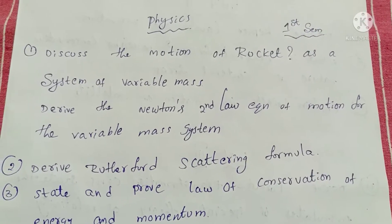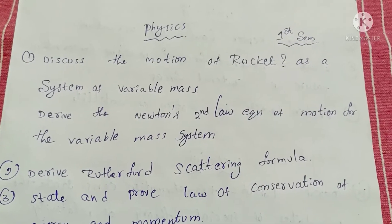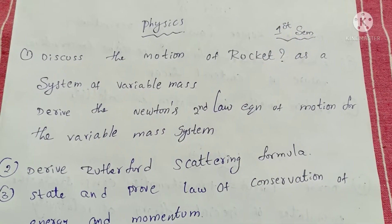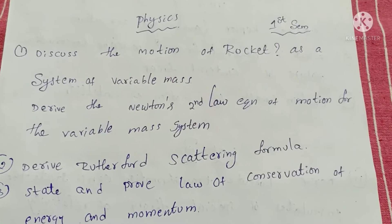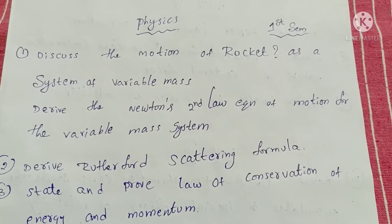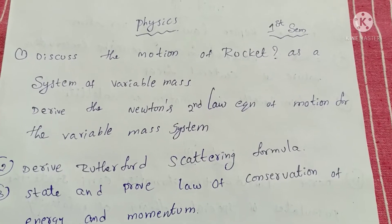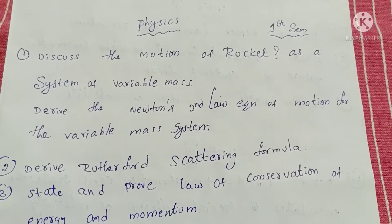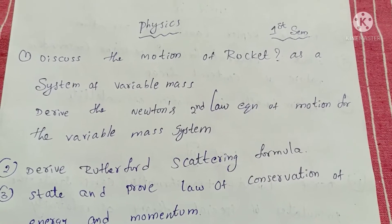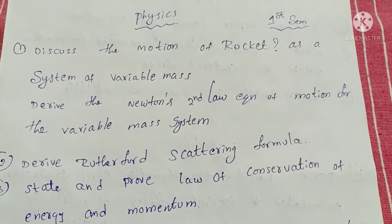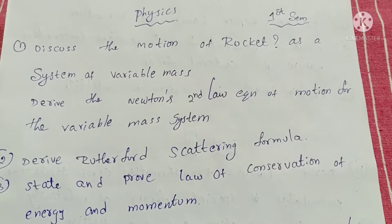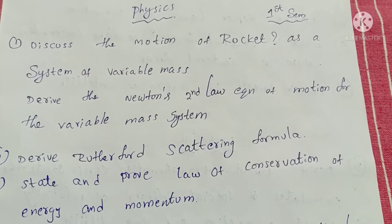Important questions for BSc Physics. First question: Discuss the motion of a rocket as a system of variable mass. Derive Newton's second equation of motion for a variable mass system.